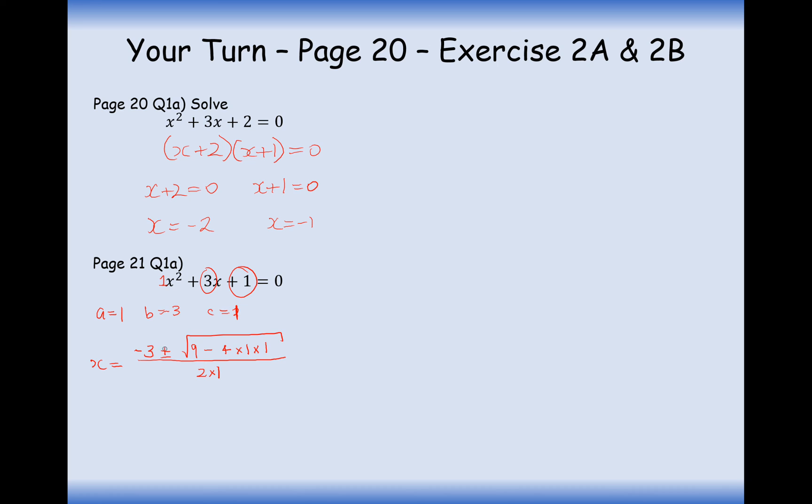Now notice here you get a plus or a minus. From this plus or minus, you're going to get two solutions. One of your solutions is going to come from the positive, and one of your solutions is going to come from the negative. So our answer here is going to be minus 3 plus or minus root 5 over 2. So one solution here is going to be x equals minus 3 plus root 5 over 2. And the second solution here is going to be minus 3 minus root 5 over 2.